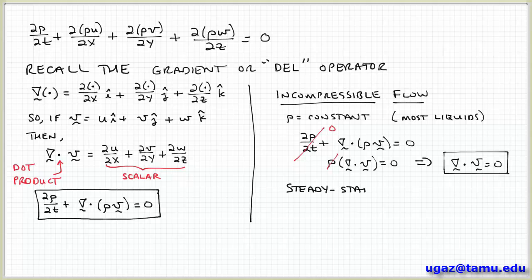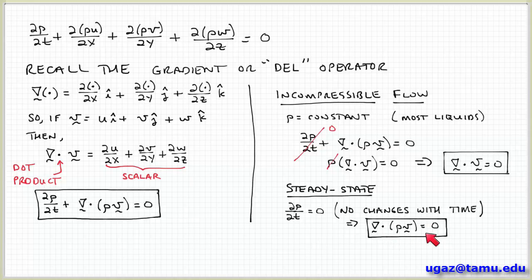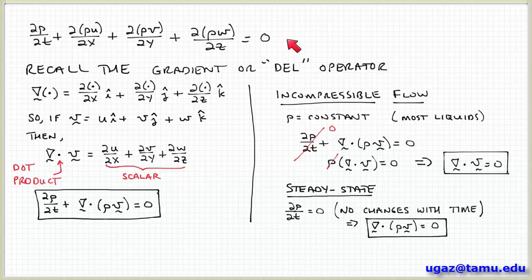Another case to consider is steady state. Steady state means that things don't change with time, so any quantities that change with time are zero. The rate of change of density with time is zero at steady state. We can therefore simplify the continuity equation to del dot rho v equals zero. Note that this isn't necessarily the same as incompressible flow, because we haven't imposed the condition that rho is constant — it can be, but in general it doesn't have to be. So this is the general form of the differential continuity equation, an expression of conservation of mass, written in shorthand using the del or gradient operator.